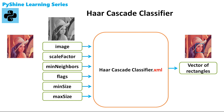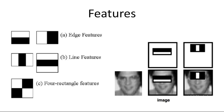Before going further towards implementation, let's discuss a little bit of theory behind the HAR Cascade classifier. Object detection using HAR feature-based cascade classifiers is an effective object detection method proposed by Paul Viola and Michael Jones in their paper, 'Rapid Object Detection using a Boosted Cascade of Simple Features' in 2001. It is a machine learning based approach where a cascade function is trained from a lot of positive and negative images, and is then used to detect objects in other images.